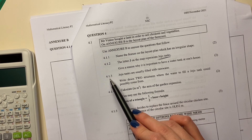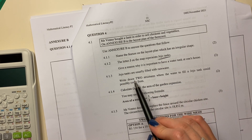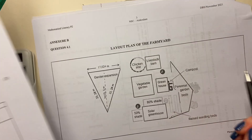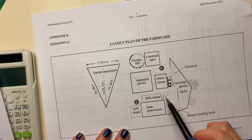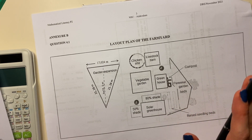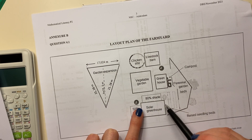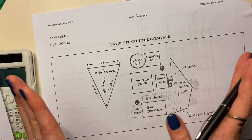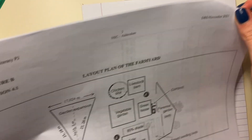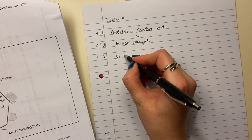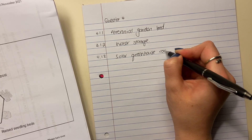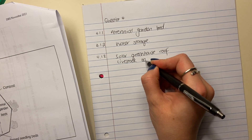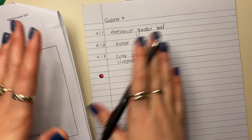For 4.1.3, Jojo tanks are usually filled with rainwater. Write down two structures where the water to fill a Jojo tank could possibly come from. You have gutters on various buildings that flow into the Jojo tanks — the water runs off the roof. These two Jojo tanks would probably be from the solar greenhouse roof, and this one would be from the livestock barn roof. You can say the roof or the gutter, indicating that rainwater is filtered into the Jojo tank.